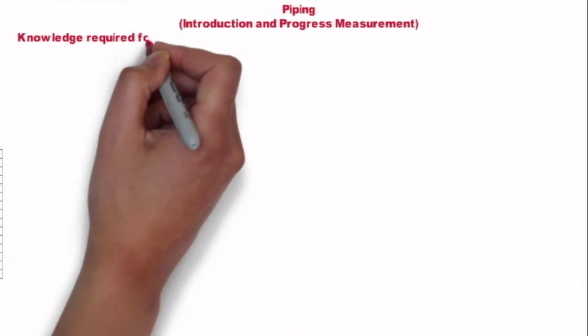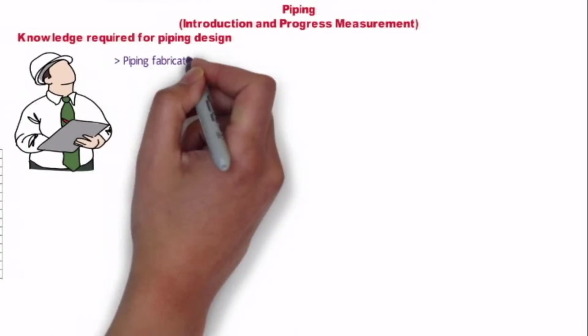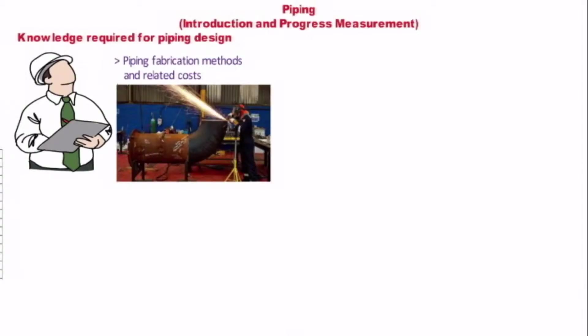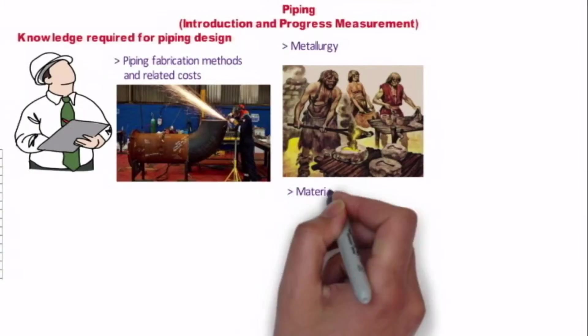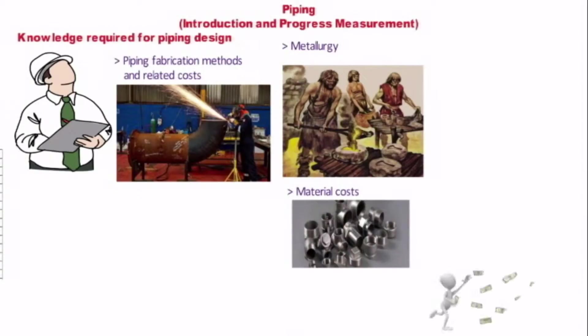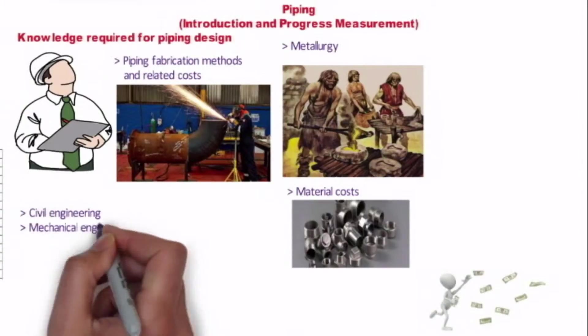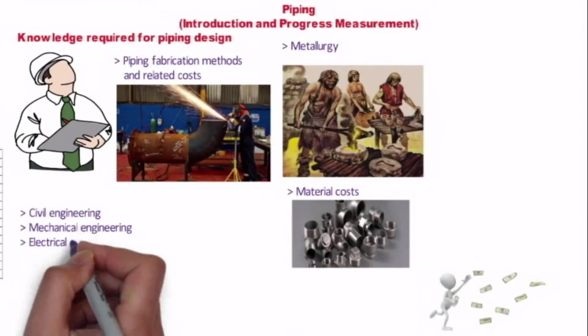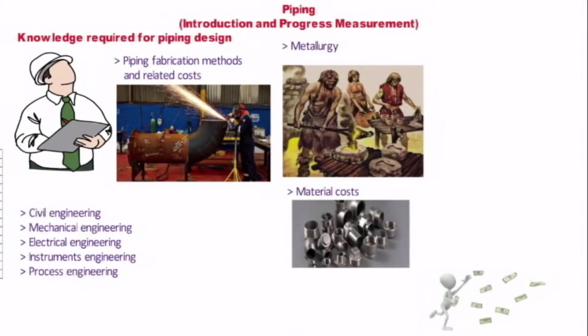Let's see what are the knowledge required for piping design. Apart from having in-depth knowledge of piping design, one should have understanding of piping fabrication method and its related cost. One should have the knowledge of metallurgy and material cost so that one should be able to provide the most economical design. Piping design being central to detail engineering effort, working knowledge of other disciplines like civil, mechanical, electrical, instrument and process engineering is also required to appreciate their problem or requirement and to be able to seek the right information from them to proceed with one's own work of piping design.